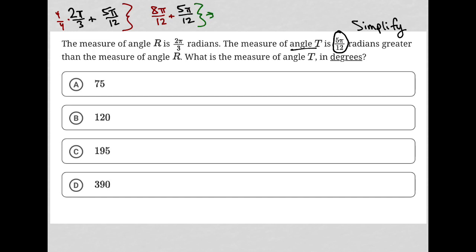Which then, because now I have a common denominator, I can just add the numerators together and keep the denominator the same. I'd have 13π/12. So now I know what angle T actually is. It's 13π/12.